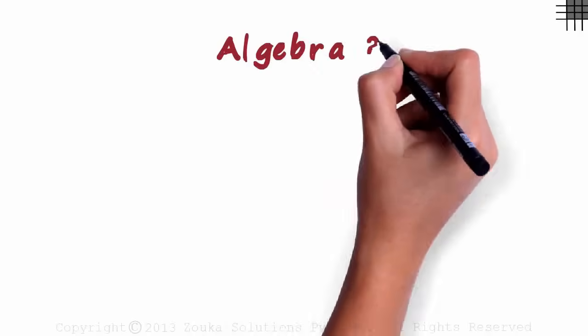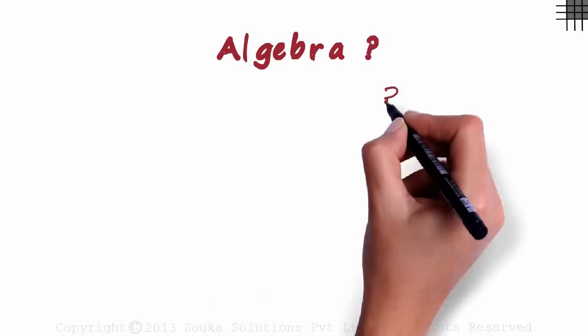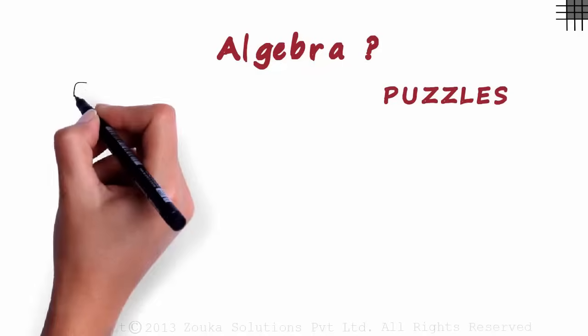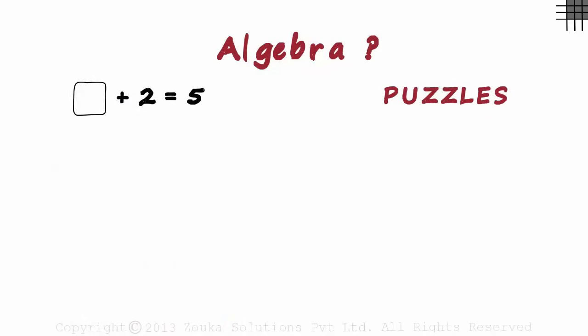What is algebra? It's simple. It's all about puzzles. Here's one for you. This plus 2 equals 5. We just have to find the number in this box.